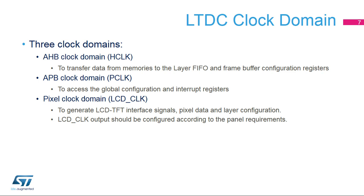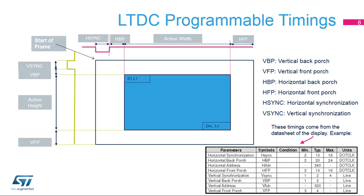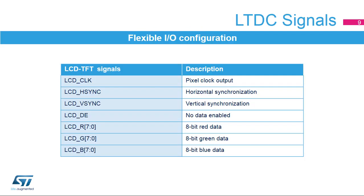To interface with TFT panels, all timings are programmable through the LTDC controller. These timings come from the TFT panel data sheet, and are VBP (vertical back porch), VFP (vertical front porch), HBP (horizontal back porch), HSYNC (horizontal synchronization), and VSYNC (vertical synchronization). The LTDC output signals are summarized in this table.